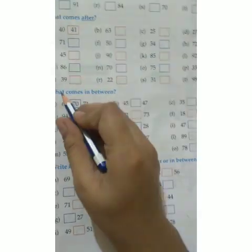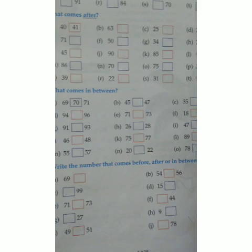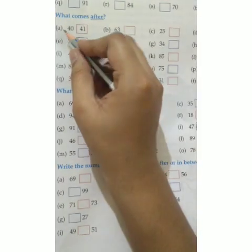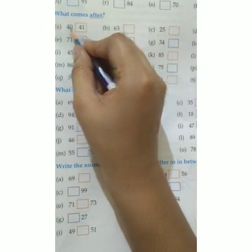From A to T. These are two-digit numbers. You have to write the number that comes after the given numbers.